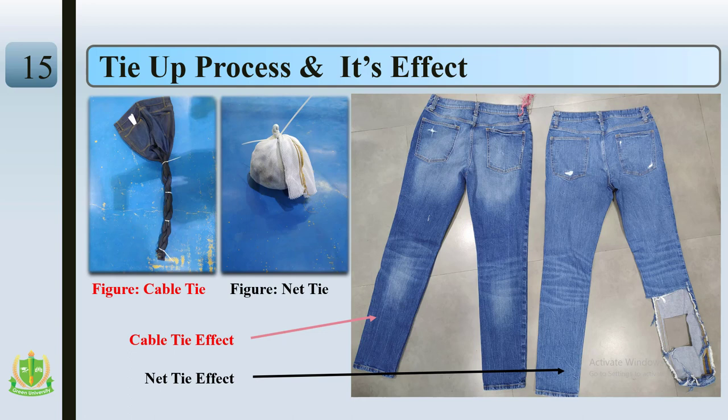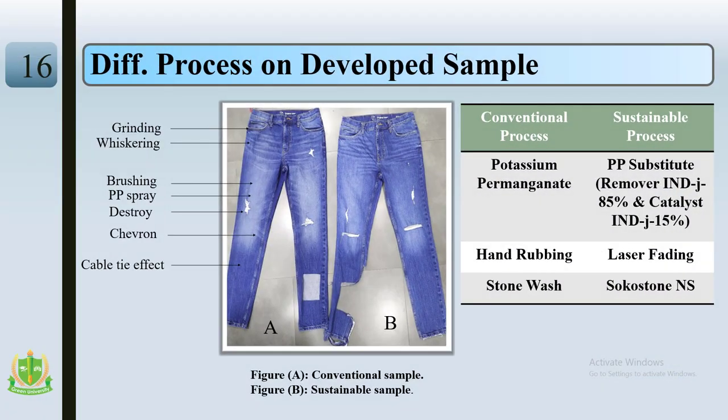There are two types of tie systems: cable tie and net type. By twisting different portions of denim and tying them, it creates cable tie, and its effect runs in the longitudinal direction. If we crumple the garments into a ball and cover with a net, then treat it through a wet process, the effect is created randomly all over the garments.